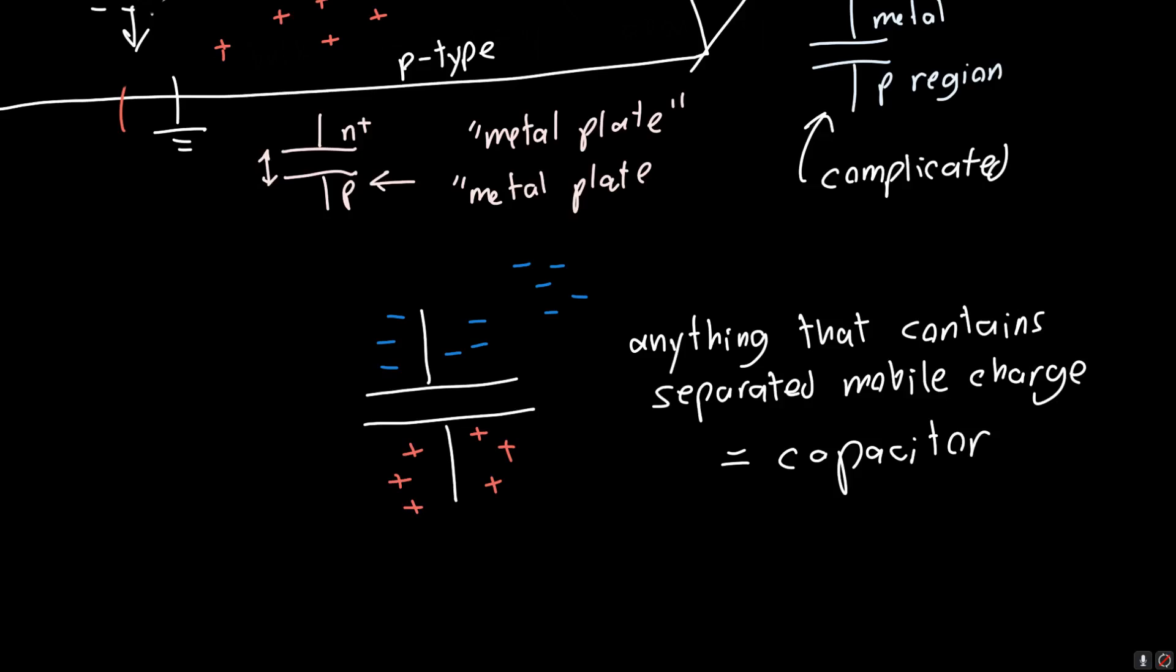Anything that contains separated mobile charge is a capacitor. And so if you keep this simple picture in your mind, equals capacitor. And if you keep this simple picture in your mind, then all this complicated physical nature of the capacitors becomes easier to understand. Just understand that it's separated charge. And it doesn't matter what kind of charges separated. It could be positive charges separated from positive charges or negative separated from negative.